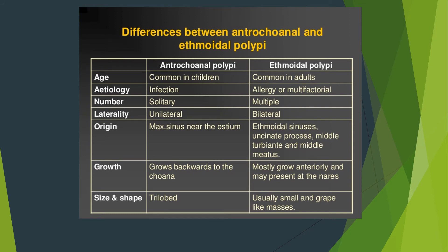What are the differences between antrochoanal and ethmoidal polypi? According to age: antrochoanal is common in children or young adults; ethmoidal polypi is common in adults. Etiology: unknown in antrochoanal; allergic or multifactorial — infection or chronic sinusitis — in ethmoidal. Number: antrochoanal is solitary; ethmoidal are multiple. Origin: antrochoanal arises from the maxillary sinus near the ostium; ethmoidal polypi originate from the ethmoidal sinuses.